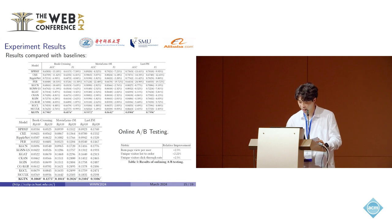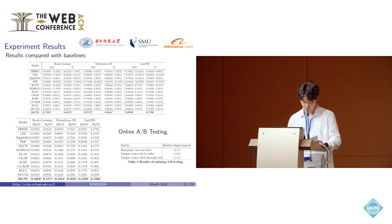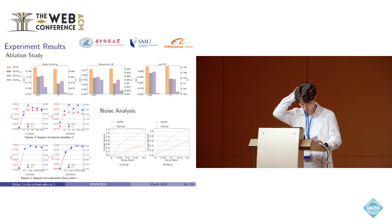We perform online testing in our Alibaba recommendation platform over two weeks, where group A is provided with results from DMR, our previous model, and group B is provided with results from KGTN. As shown in Table 5, KGTN improves item page view per user by 2.3%, visitor list-to-order rate by 2.22%, and visitor click-through rate by 2.3% relatively. The ablation study results demonstrate the effectiveness of each main component.